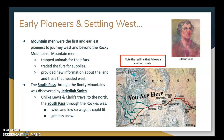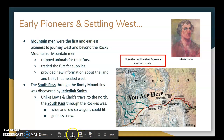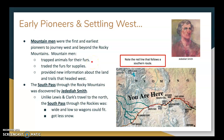Early pioneers settling the west — mountain men were the first and earliest pioneers to journey west and beyond the Rocky Mountains. What did they do? They trapped animals for their furs. Furs were very valuable in those days. In fact, in some places you could use a beaver pelt or beaver fur as a substitute currency — almost like money, used for trading. They also traded furs for supplies and provided new information about the land and the trails heading west, since very few Americans had been out there before.